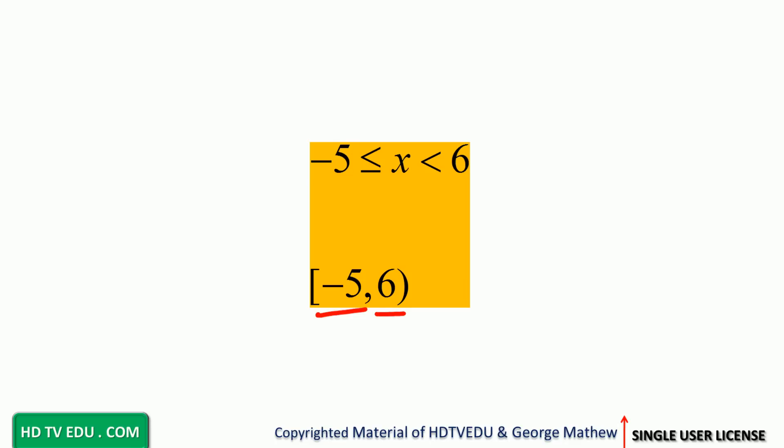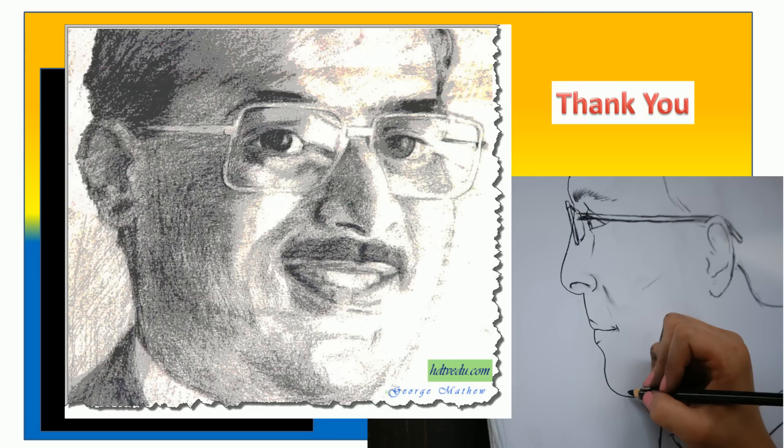Remember, it has to be less than 6. Negative 5 is included because negative 5 is less than or equal to x. This is George Matthews, signing off. Good luck.